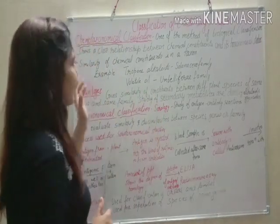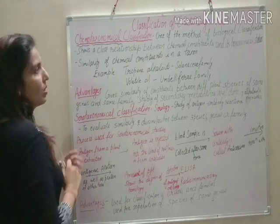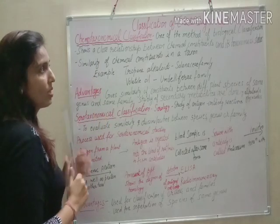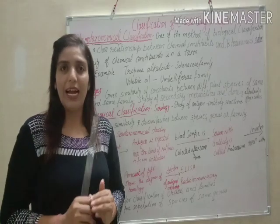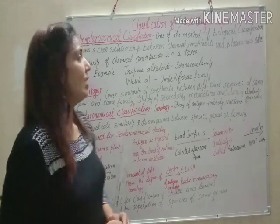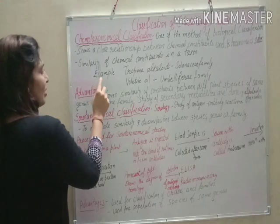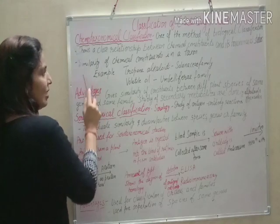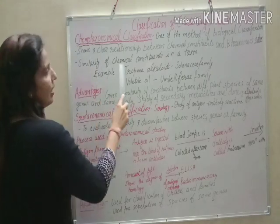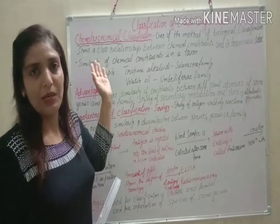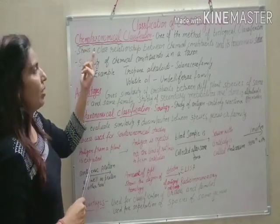This classification shows a close relationship between the chemical constituents and taxonomical status. We also study the similar types of chemical constituents present within a taxon through chemo-taxonomical classification.